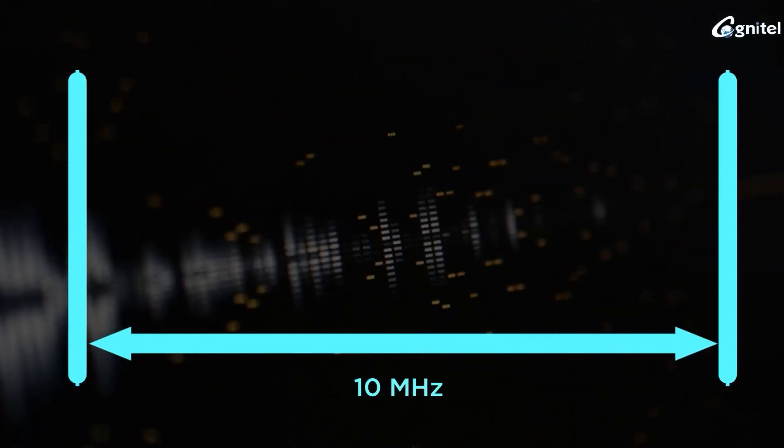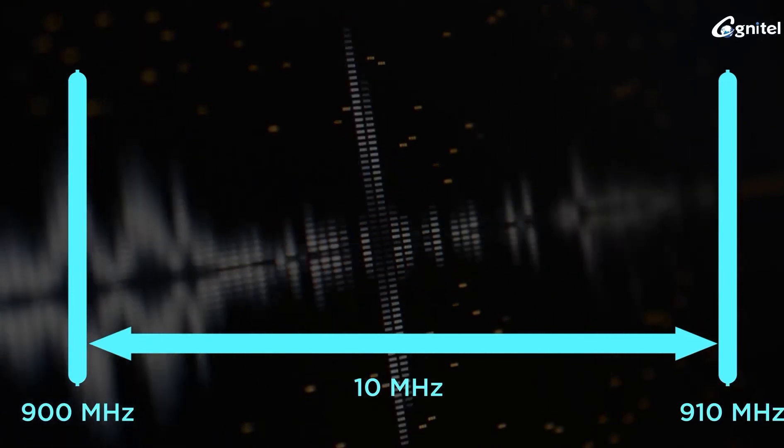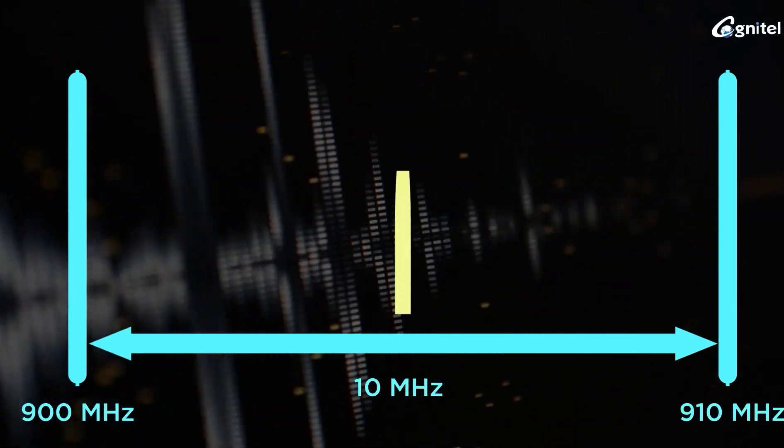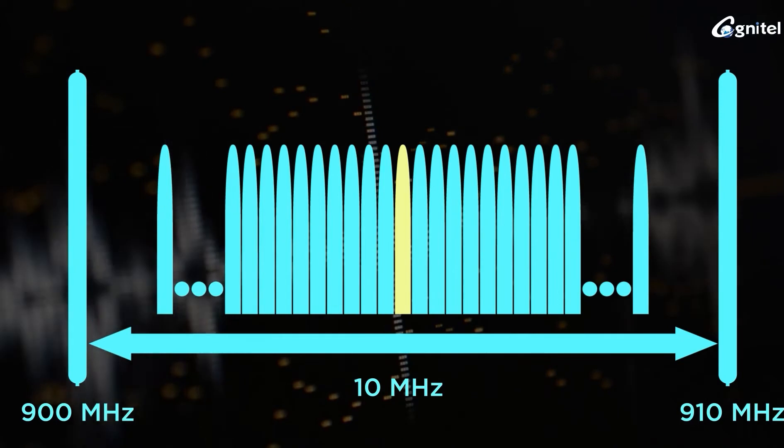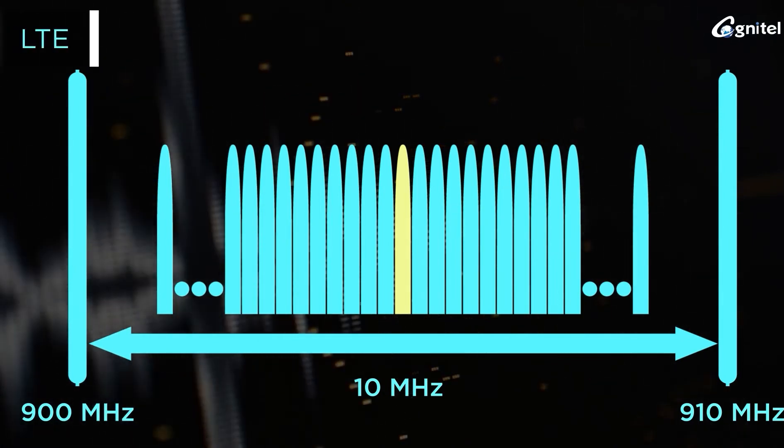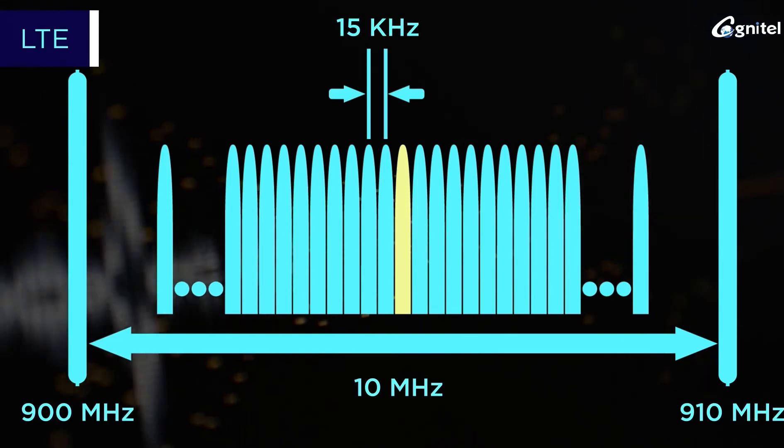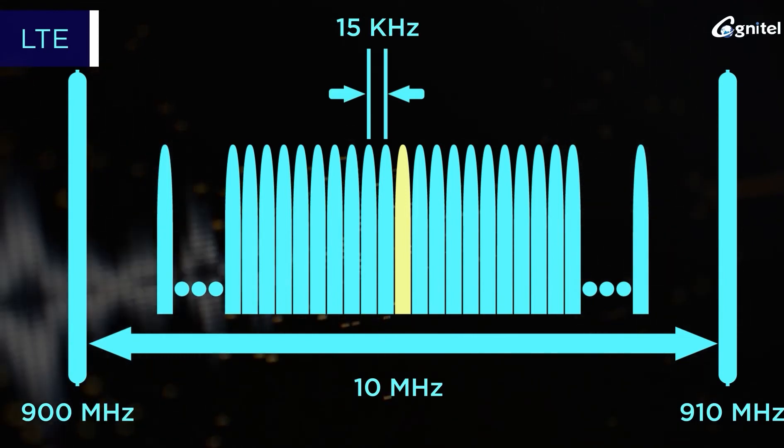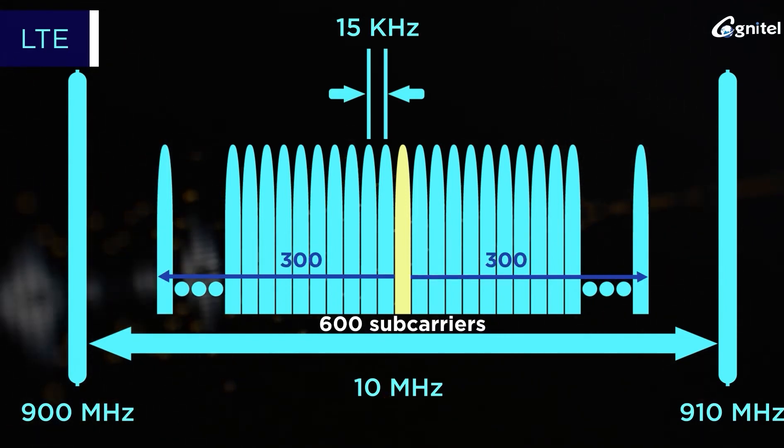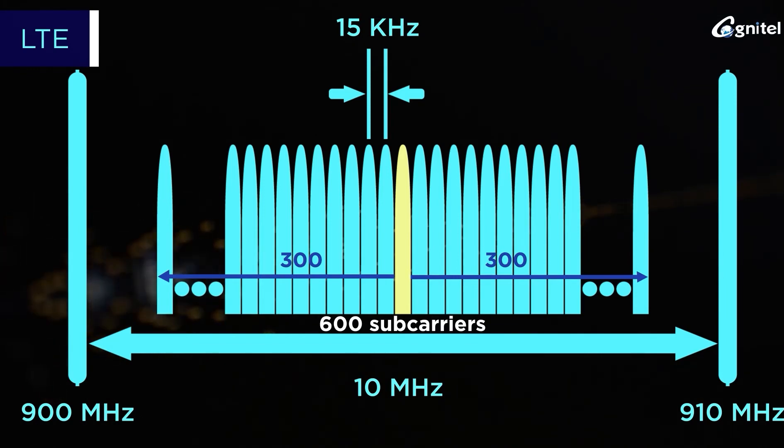Suppose an operator has 10 megahertz of total spectrum from 900 to 910 megahertz. This carrier spectrum has many modulated subcarriers embedded inside it. In LTE, these subcarriers are placed at 15 kilohertz spacing.